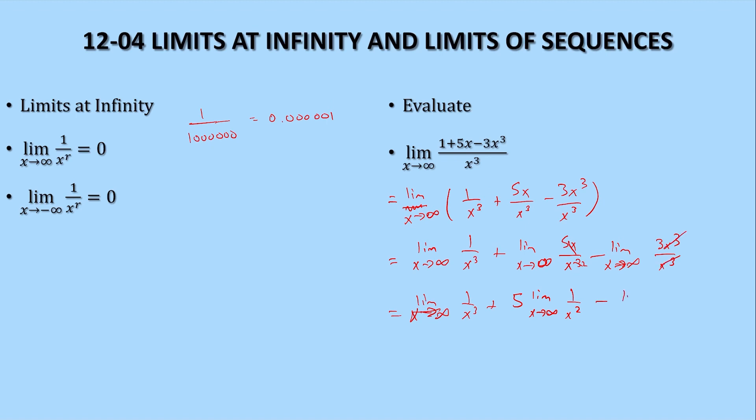There the x cubes cancel, leaving 3. The reason why I did this is so now we can see that matches that. So that's a 0. This is 5 times 0, so often we won't rewrite it as 5 times the limit. You can just leave it as 5 over x squared, but just realize that it's still 0. And the limit of a constant is the constant. So this is just negative 3.